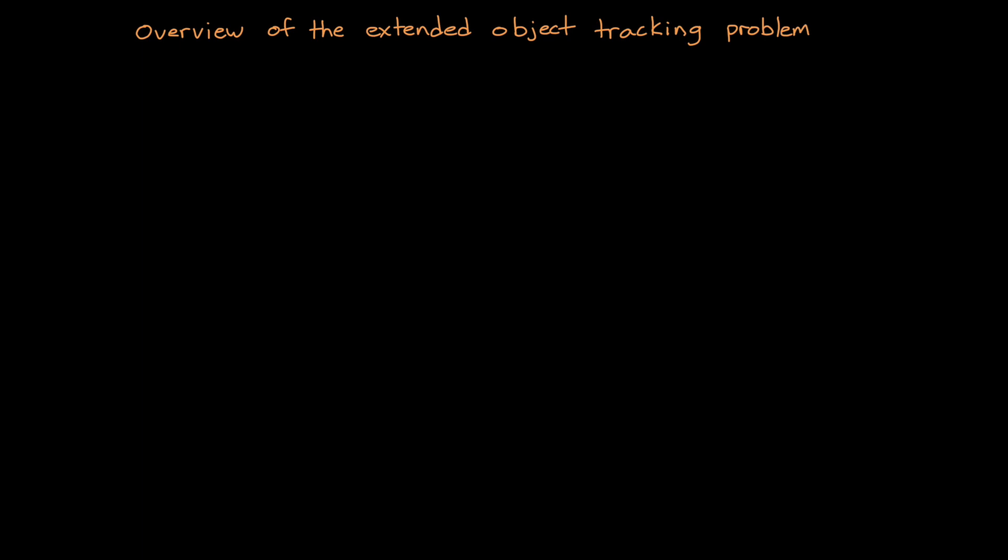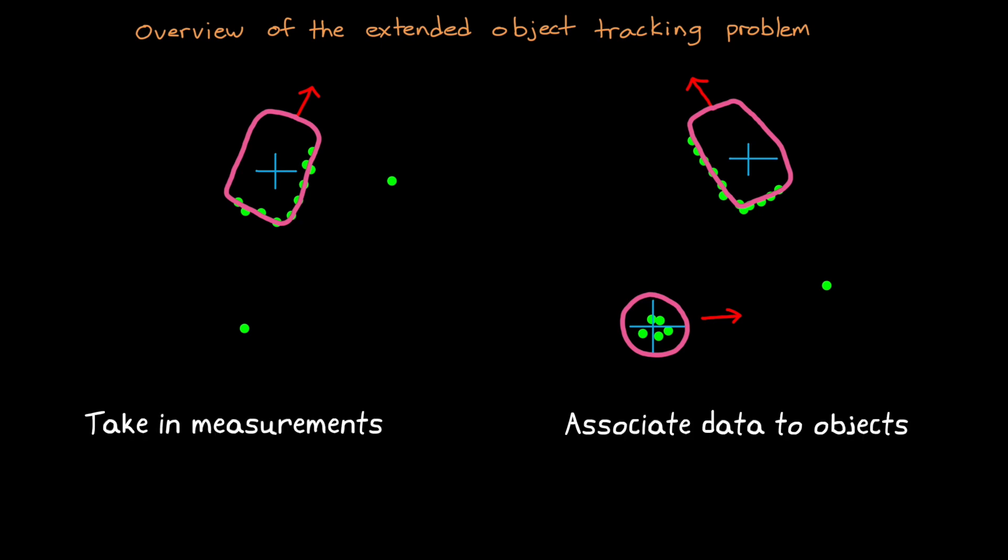So this is the overview of the extended object tracking problem. We need a tracker that can take in a lot of measurements from an unknown number of extended objects, which are potentially close to other objects in the environment, and then estimate the number of objects in the scene and the position, kinematics, and extent of each one of them. Now, in general, extended object trackers still need to do the same things that point object trackers do. Namely, take in measurements, associate detections to objects, add and delete tracks, and determine motion models. Except with extended objects, we have to do this with a lot more information. And the data association step is particularly difficult, since there's potentially multiple detections per object. And trying to associate a group of detections to one object isn't necessarily straightforward. So that's what we're going to mostly focus on for the rest of this video.